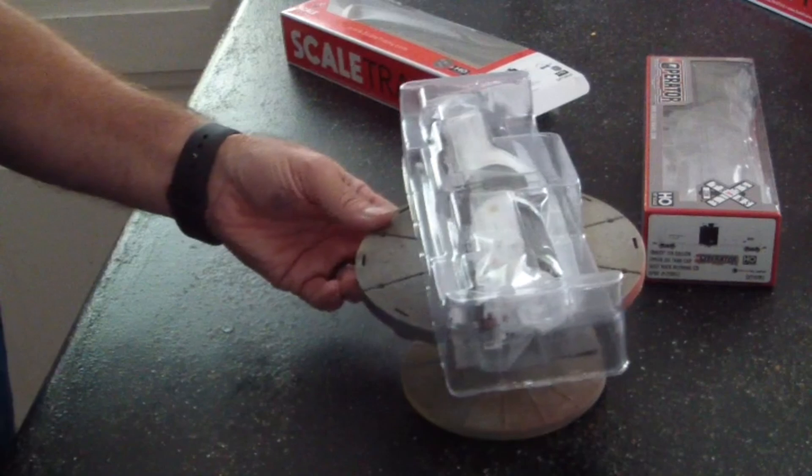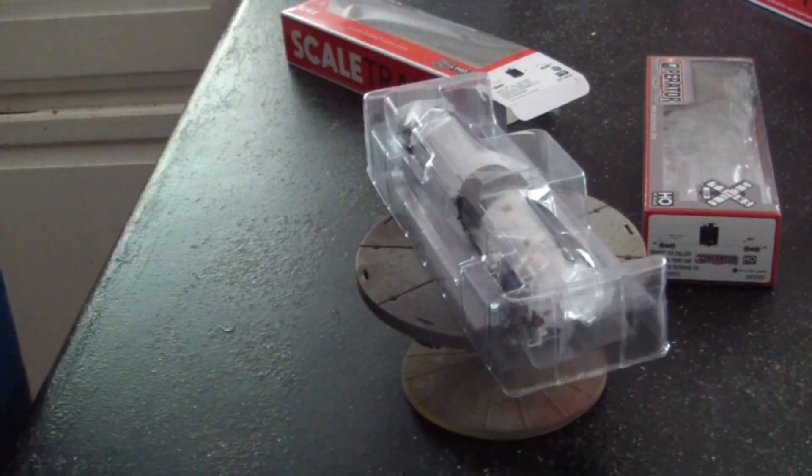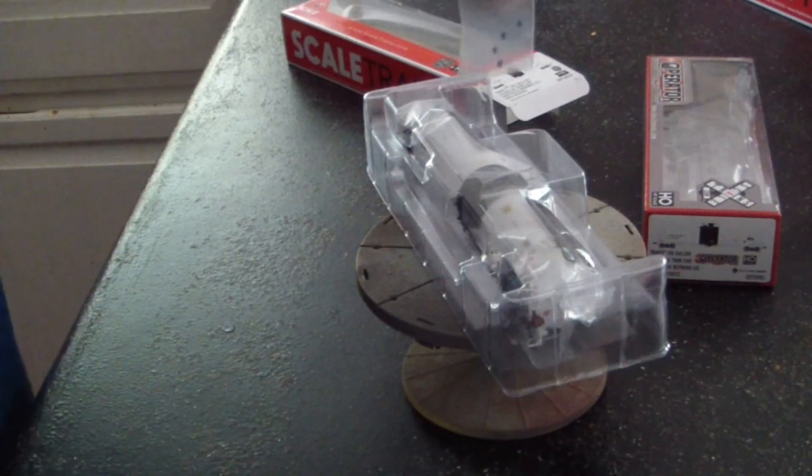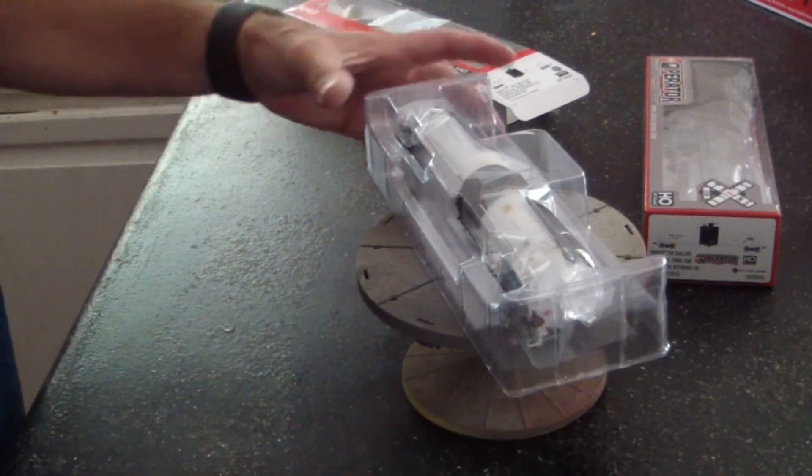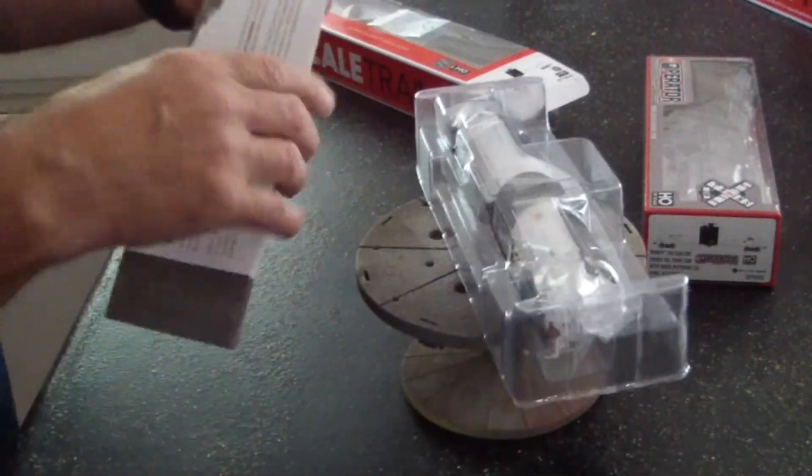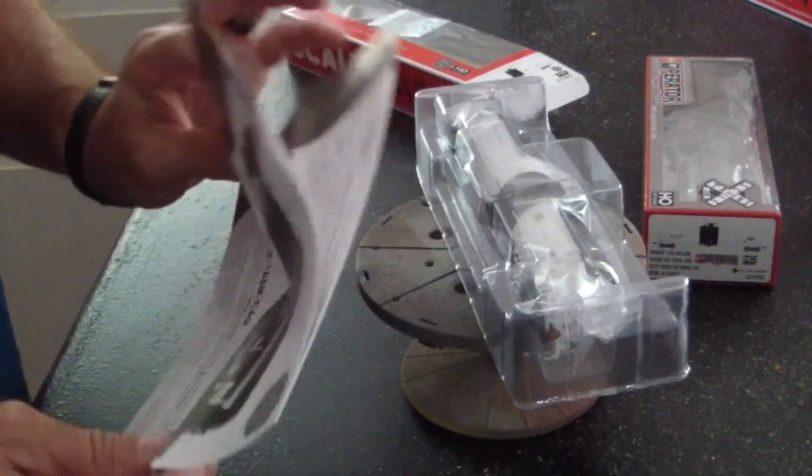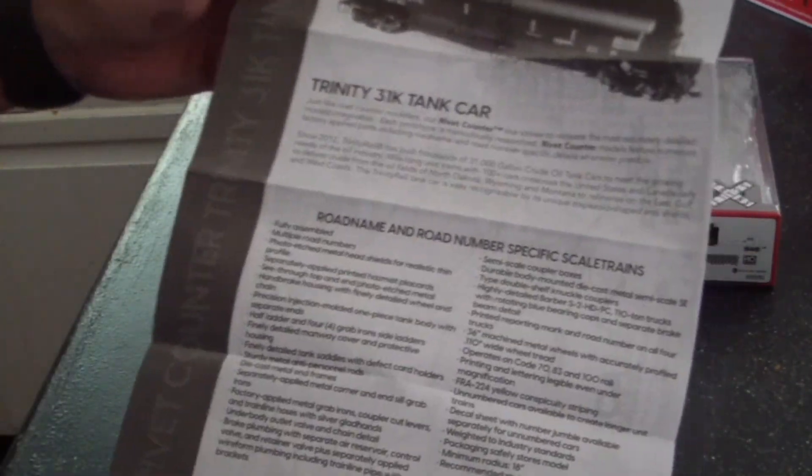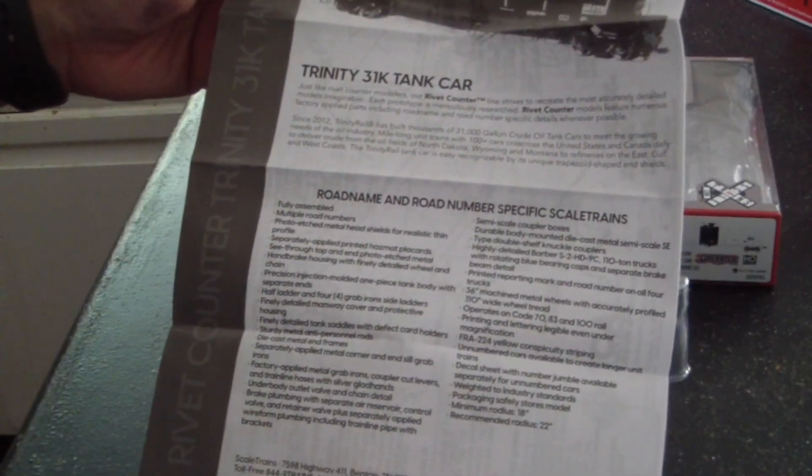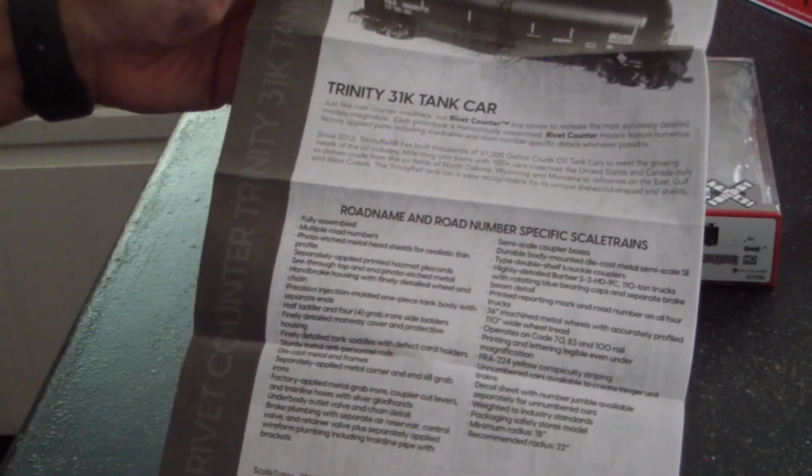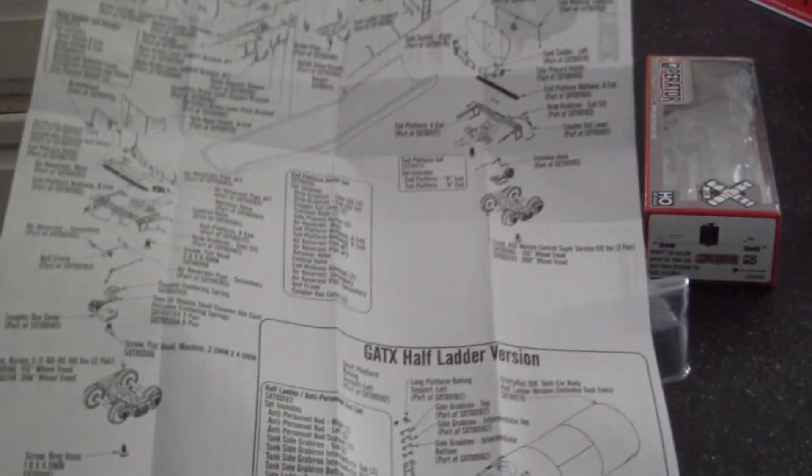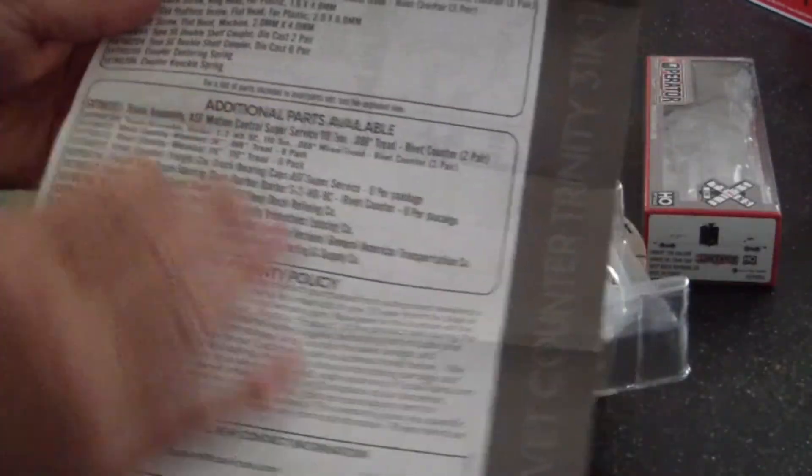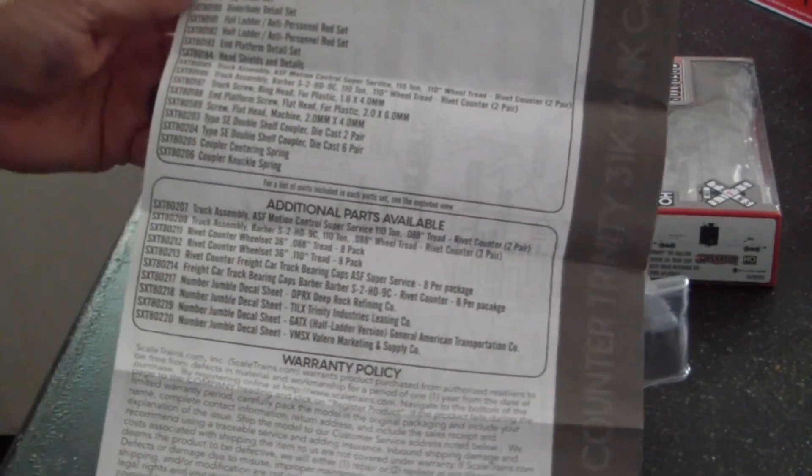Of course it's in its nice blister pack. It comes with four extra roller bearings, I don't know if you can see them but there's four roller bearings in there. We get a nice detailed road name and road number specific, as always with Scale Trains. A nice parts exploded view and then here's your parts list.